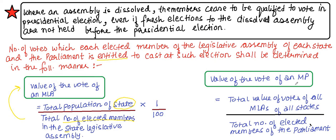The value of the vote of an MP — how is it determined? Take the total value of votes of all MLAs of a state, then divide by the total number of elected members of Parliament. That gives you the value of the vote of an MP.